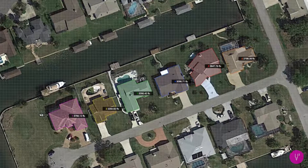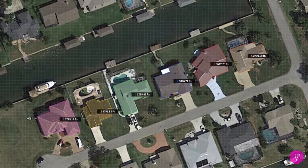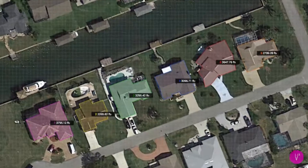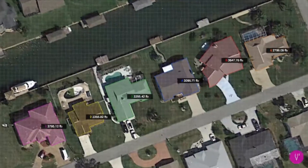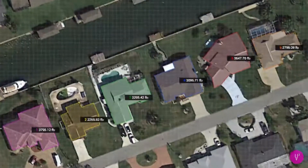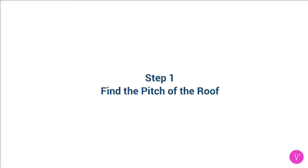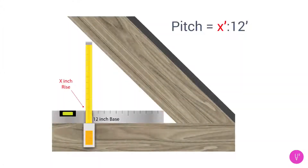I'd like to show you how to quickly calculate the area of any roof in three easy steps. Step 1: Find the pitch of the roof. The roof's pitch is the number of inches the roof rises in 12 inches.